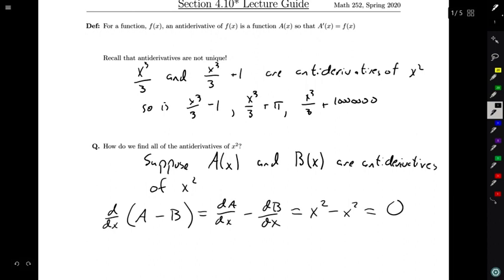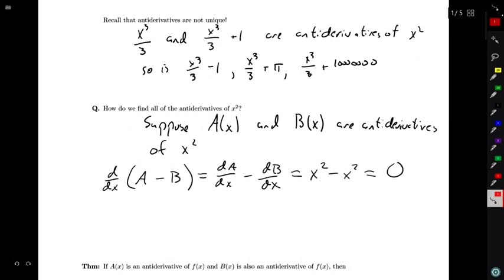So what we find is that this function here, A - B, has derivative zero. And if we think, well, what does it mean to have derivative zero? Well, derivative zero means that you have constant, that your function is constant. It means that your function isn't changing at all because you have zero slope everywhere. So if A - B is constant, maybe we could call A(x) - B(x) equal to some constant c.